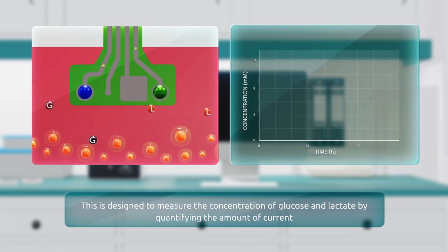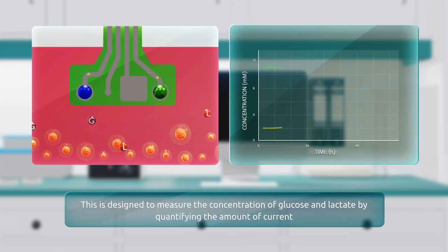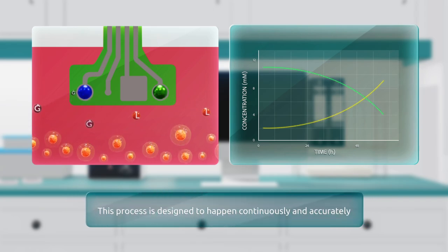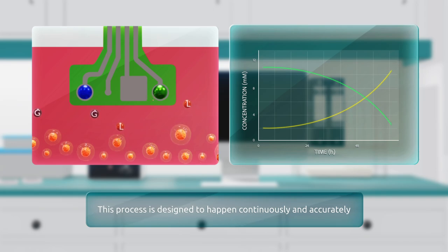Conventional periodic sampling methods can impact cell growth negatively and may risk contaminating samples. But continuous inline monitoring offers a solution to the challenges of conventional periodic sampling.